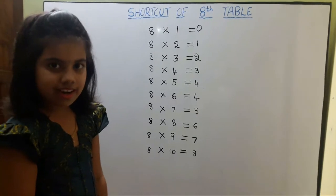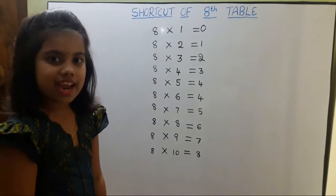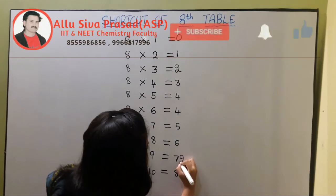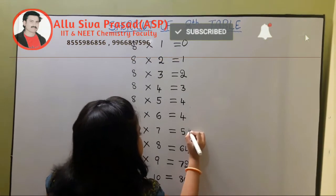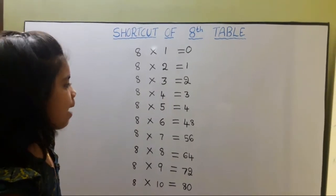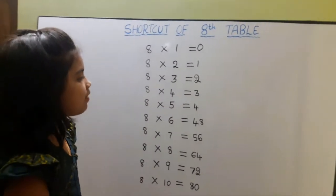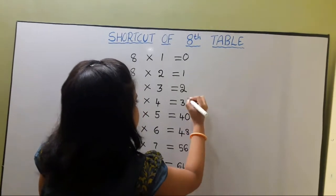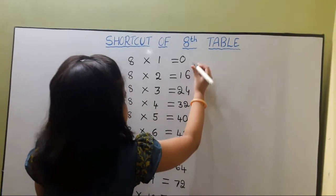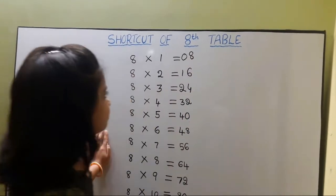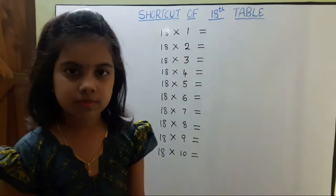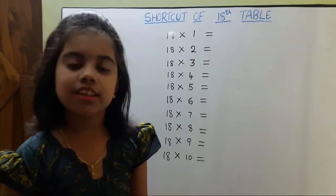Now we should write down to up 0 to 8 even numbers. Again we should write down to up 0 to 8 even numbers. So this is the shortcut of the 8th table. Next I am telling the shortcut of the 18th table.